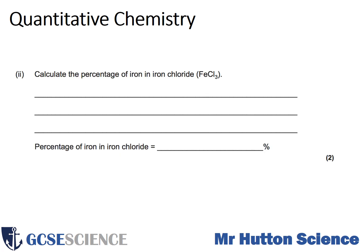The next question: calculate the percentage of iron in iron fluoride. You're going to need to calculate the relative formula mass of iron fluoride and know the relative atomic mass of iron. Then you make a division calculation with those two numbers and multiply by 100 to give you your percentage composition by mass. Pause the video now and attempt the question.